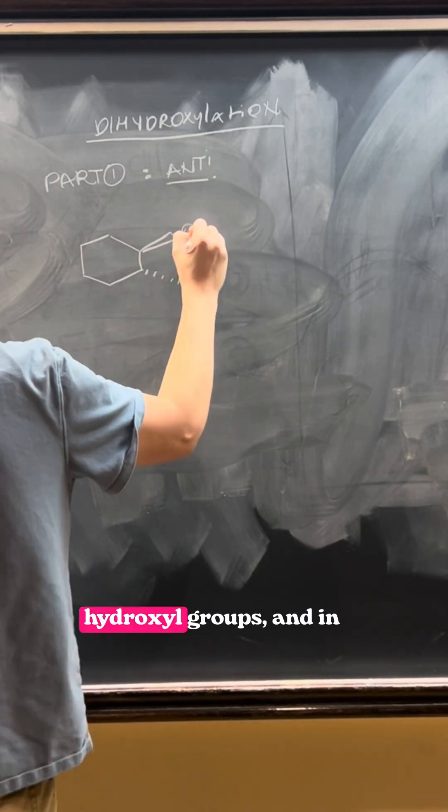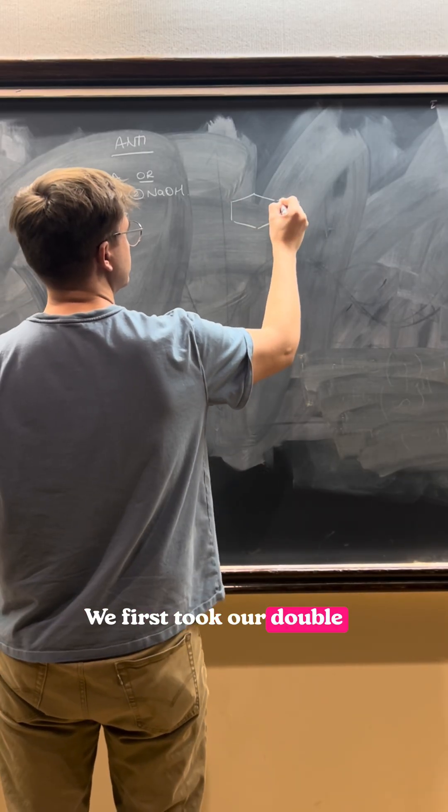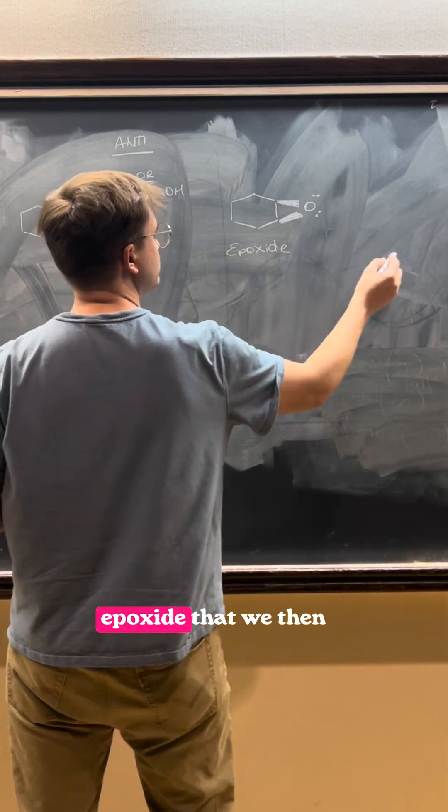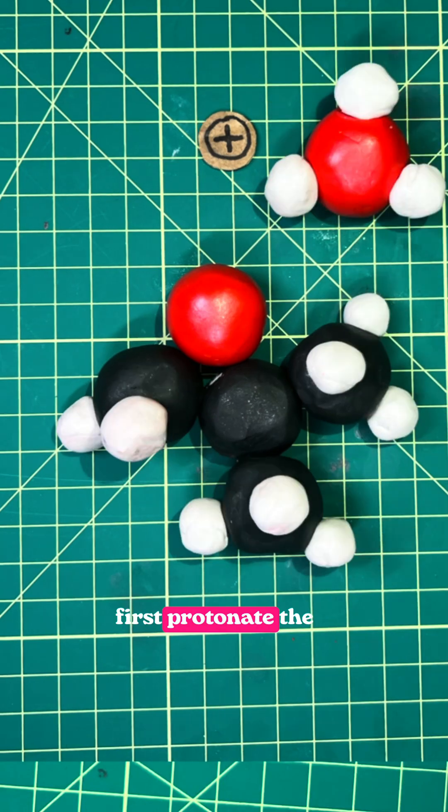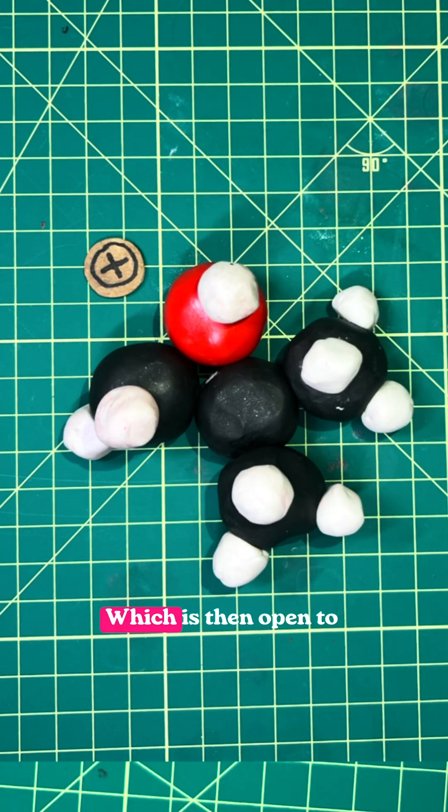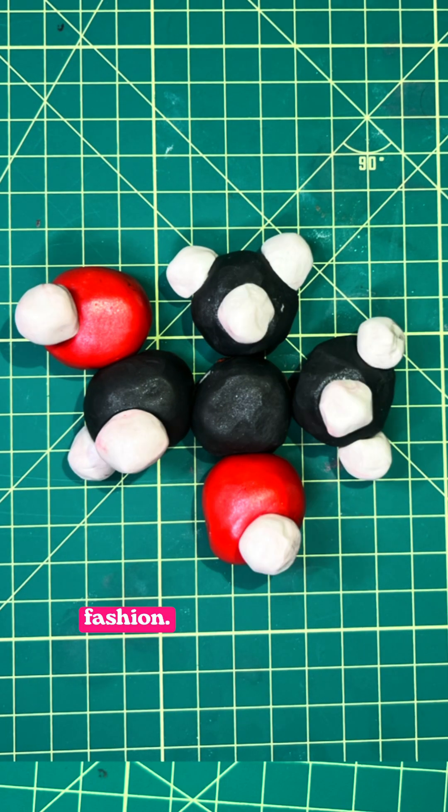A diol is a molecule containing two hydroxyl groups, and in previous reactions we learned how to synthesize them through anti-addition. We first took our double bond and formed an epoxide that we then treated in acidic conditions to first protonate the oxygen of the epoxide, which is then open to attack by a nearby water molecule in an anti-addition fashion.